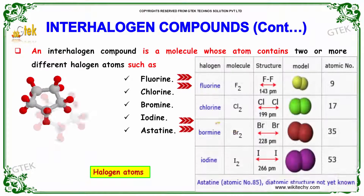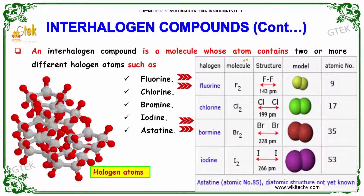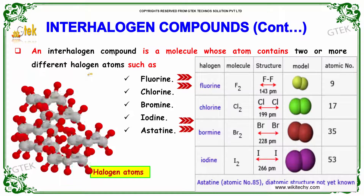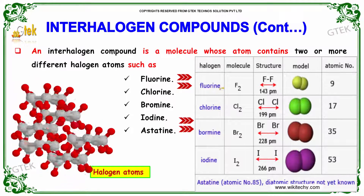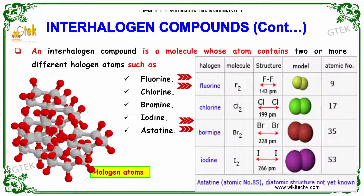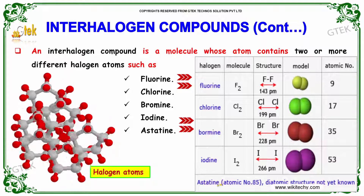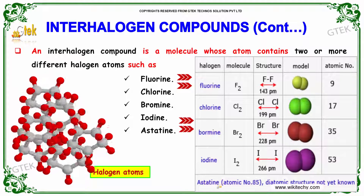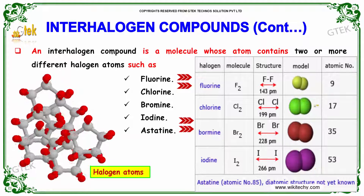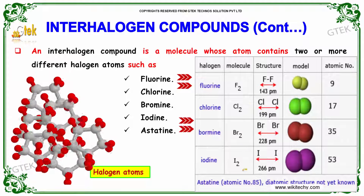An interhalogen compound is a molecule whose atoms contain two or more different halogen atoms, such as fluorine, chlorine, bromine, iodine, and astatine. Here are the atomic numbers and molecular models with structure and molecule details.